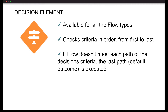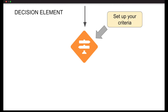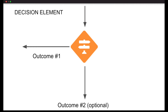If your flow doesn't meet any of the outcome logic that you specify, the last outcome, also known as the default outcome, is executed. The way that it works is you have a flow and somewhere in your flow is your decision element. Within that element, you set up your different outcome criteria — you can have one or several. The decision element does its check and depending on whichever outcome criteria is met first, that outcome is executed. And if none of the outcome criteria is met, then the default outcome is the last path.